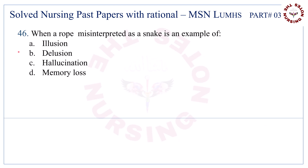Question number 46. When a rope is misinterpreted as a snake, it is an example of — the correct answer is A — illusion.